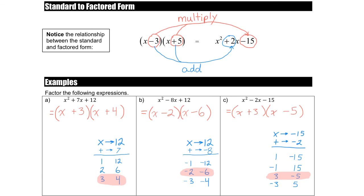One thing to notice is that in each of these examples, there is no number in front of the x squared. In the next lesson, we're going to talk about what to do when you have a number other than 1 in front of the x squared — those are called complex trinomials. But the principle is going to be the same: the numbers that go in your brackets multiply to the last number in standard form and add to the middle number. If you have questions about these, please reach out and I'll do my best to help.